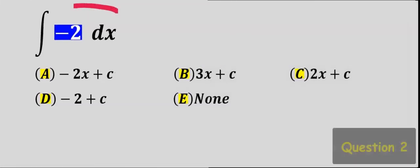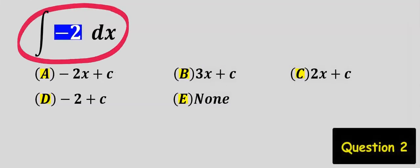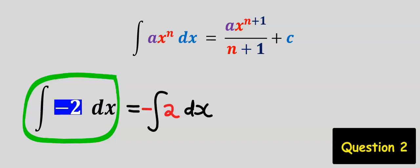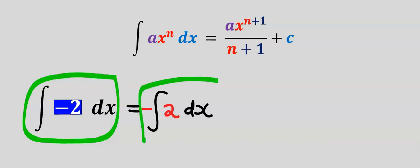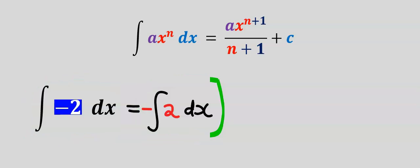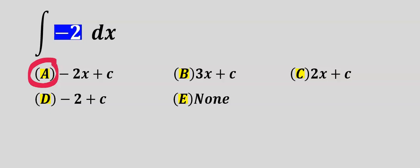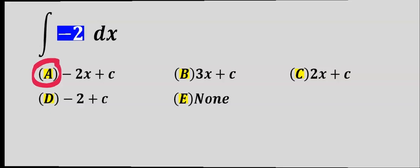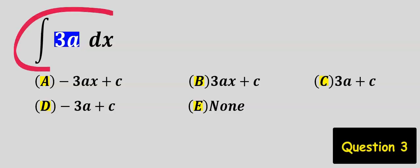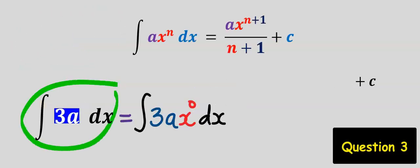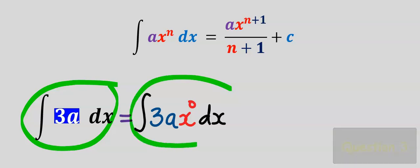Let's integrate this next function. I can rewrite this by taking the minus out of the integral, and our answer is minus 2x plus c. This c was discarded in differentiation. Our answer is a.